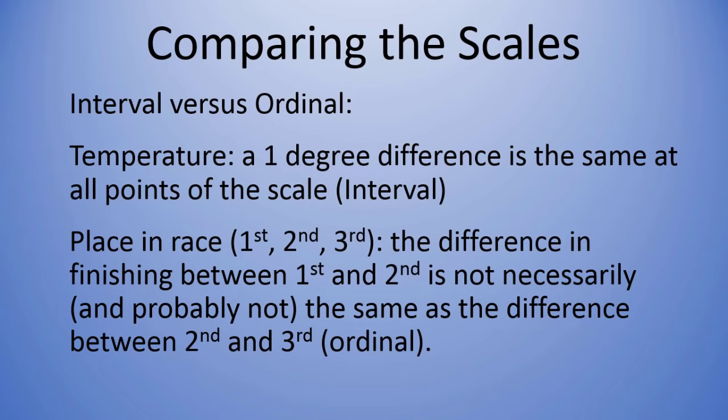So those aren't equal intervals among the adjacent categories, and that's why it's ordinal. For this example, it's ordinal because we know there's order to it—first is better than second, second's better than third—but we can't say that those adjacent categories are equal.